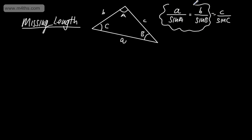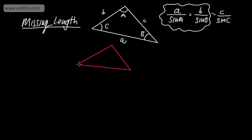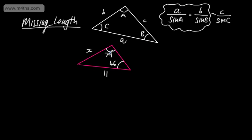I simply like to focus on two parts at a time. So I'm going to draw up a triangle and find a missing length. This angle here is going to be 79 degrees, this one is 46 degrees, I'm going to have 11 centimeters here, and I want to find this length which I'm going to call X. All I can say at this stage is X over sine of 46 will be equal to 11 over sine of 79.